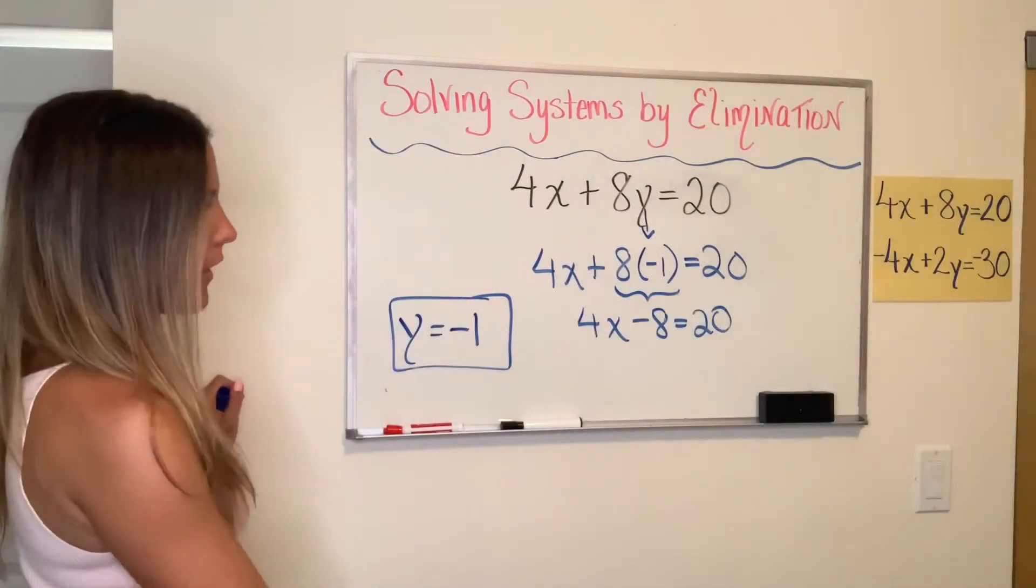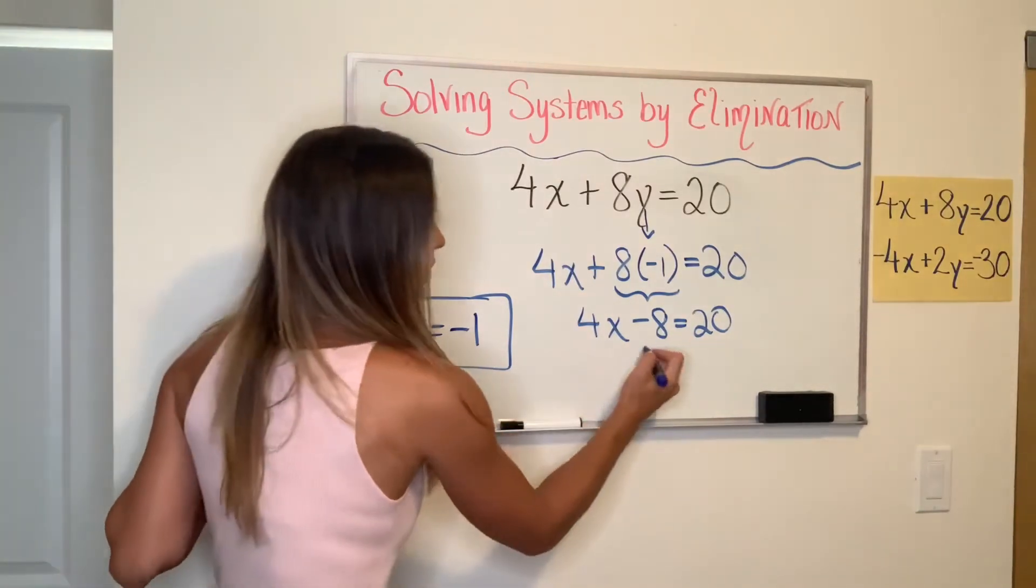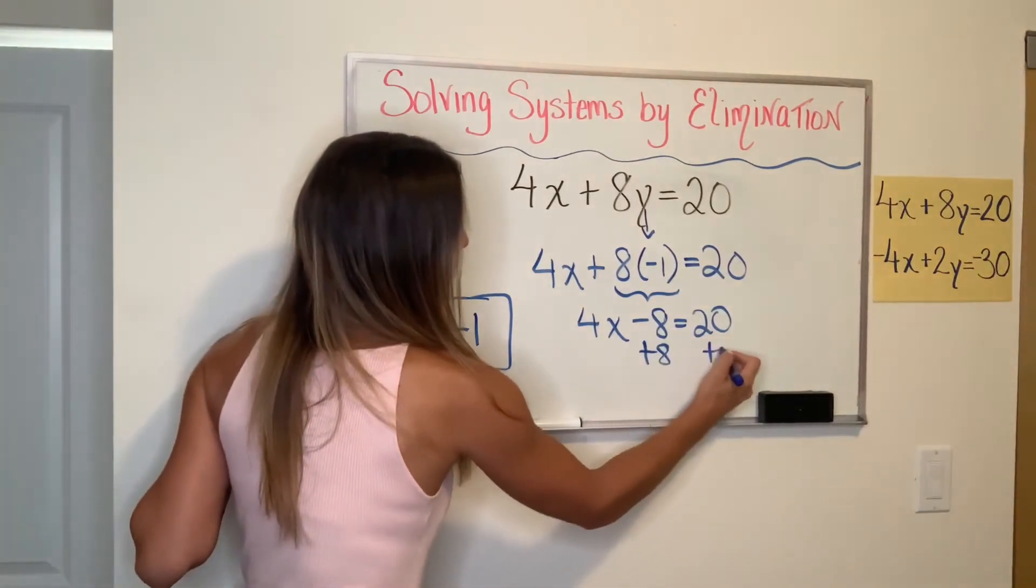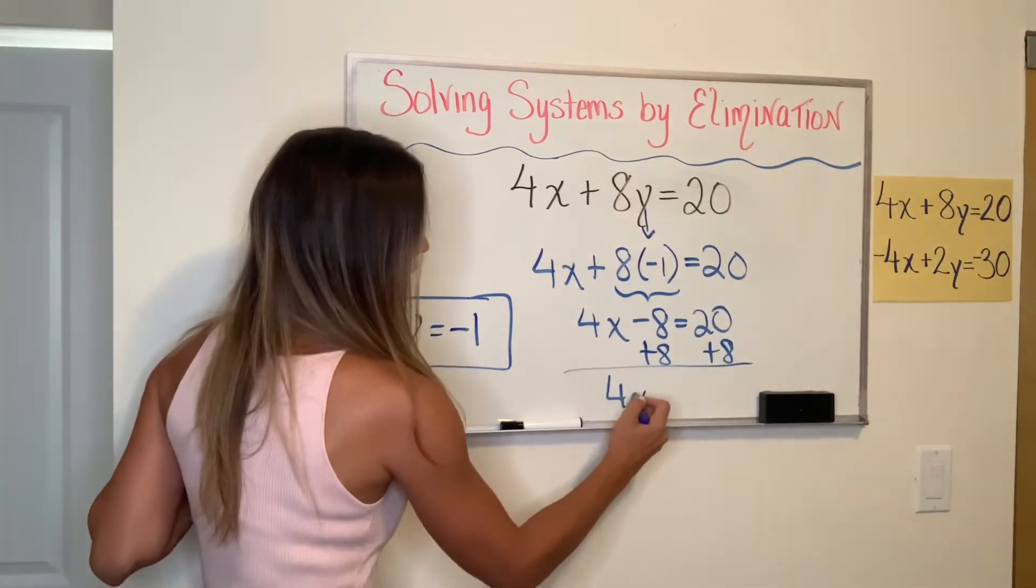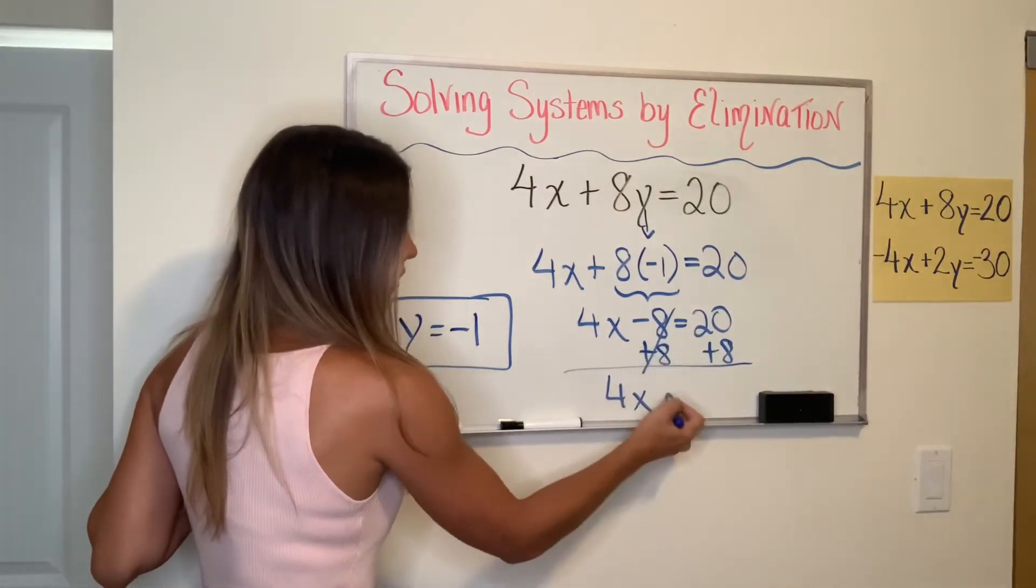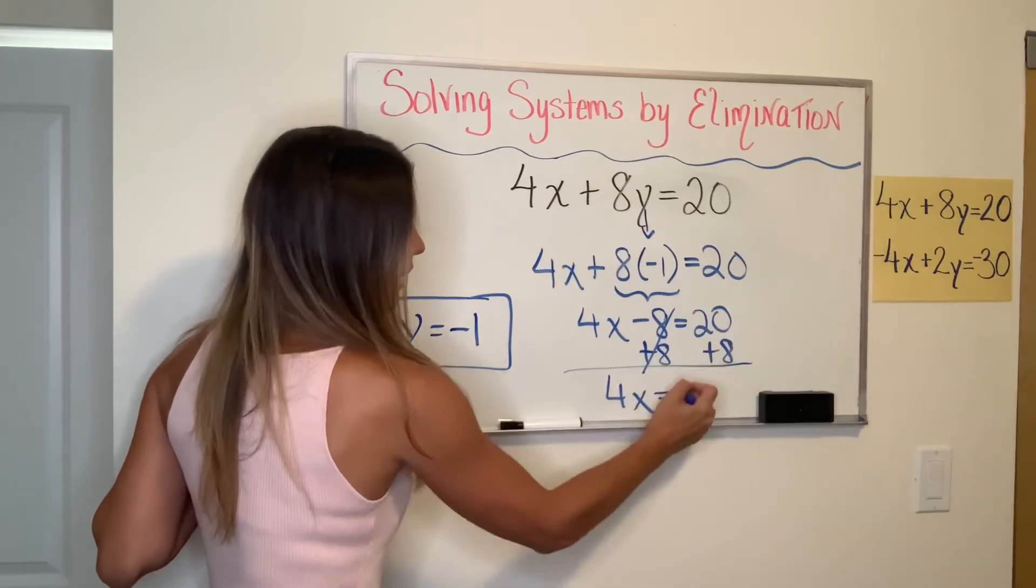So I have 4X minus 8 equals 20. I've got a two-step equation. I like to get rid of addition or subtraction first. So I'm going to do the inverse operation of minus 8, which is plus 8 on both sides. That leaves me with 4X. These cancel out because they equal 0. Equals 20 plus 8 is 28.